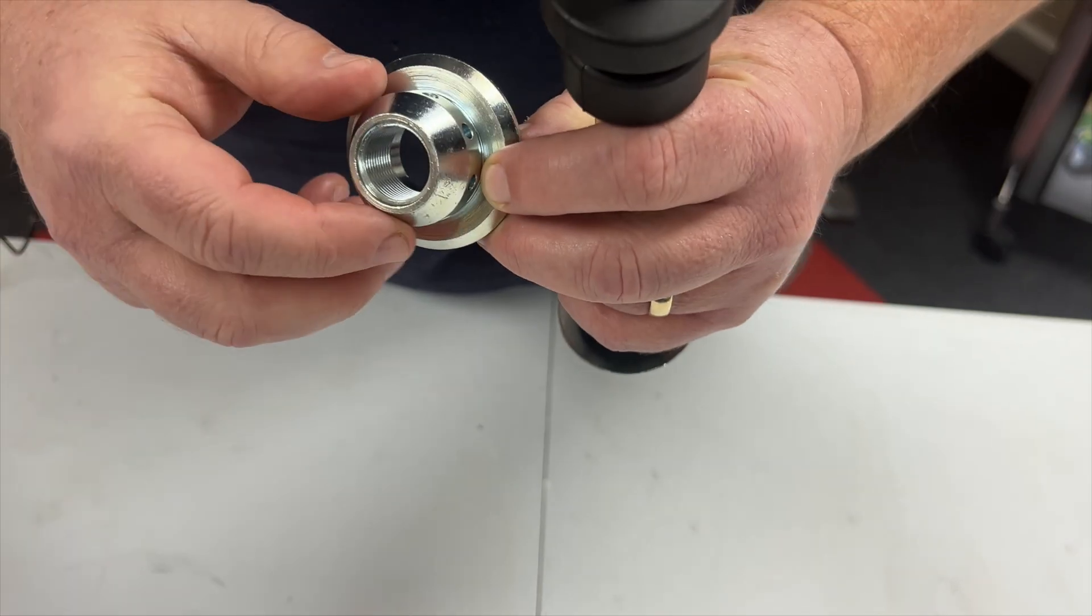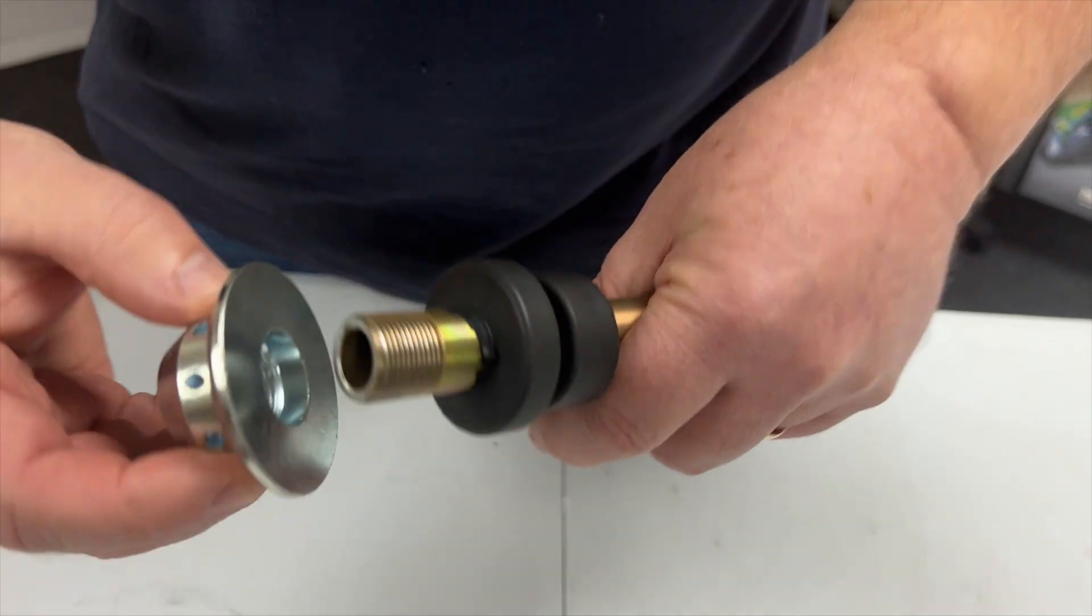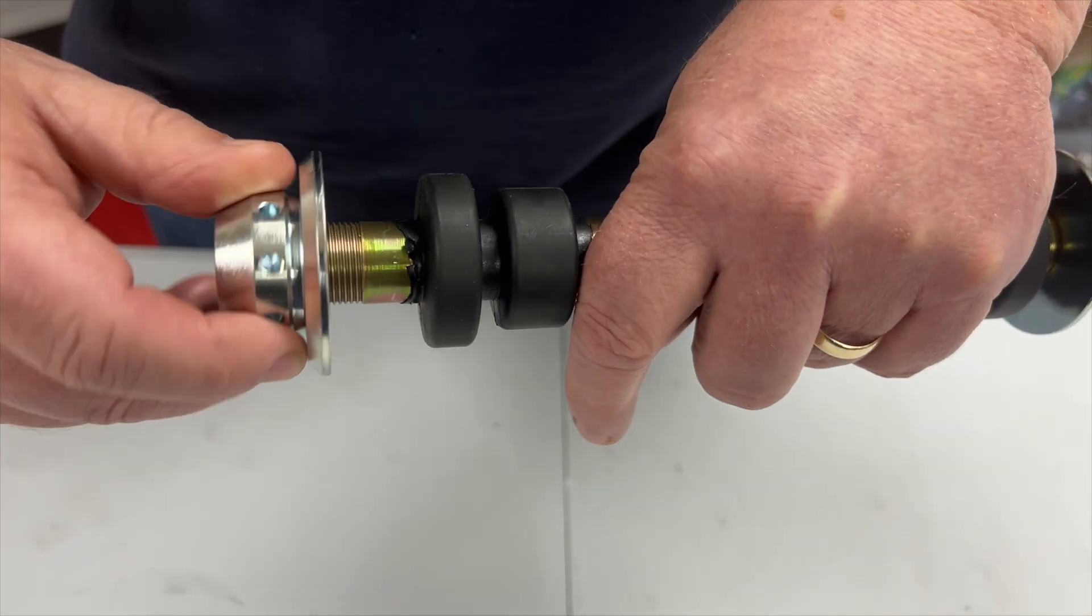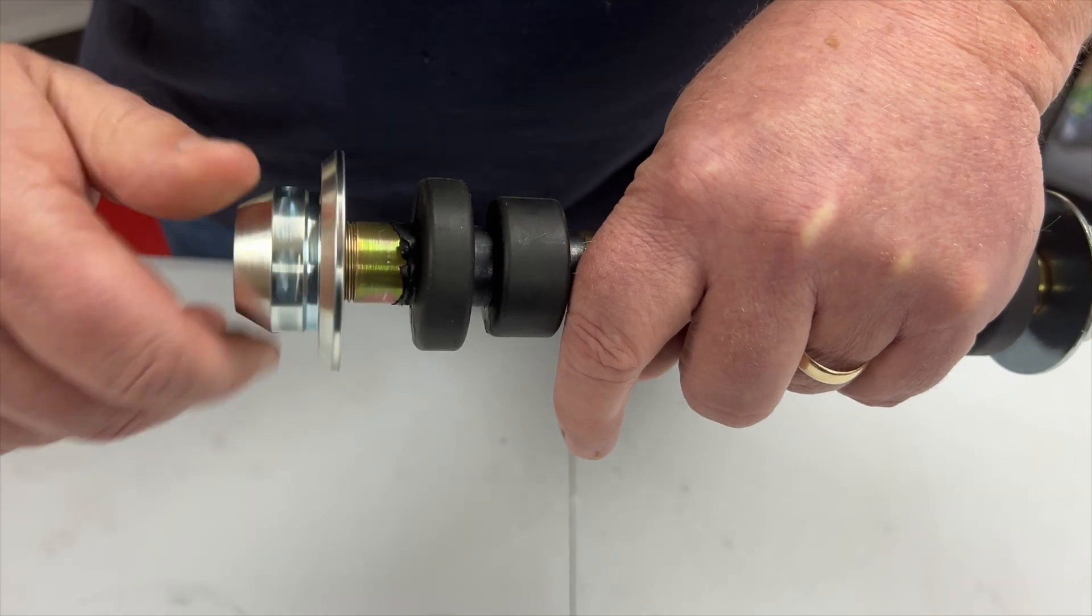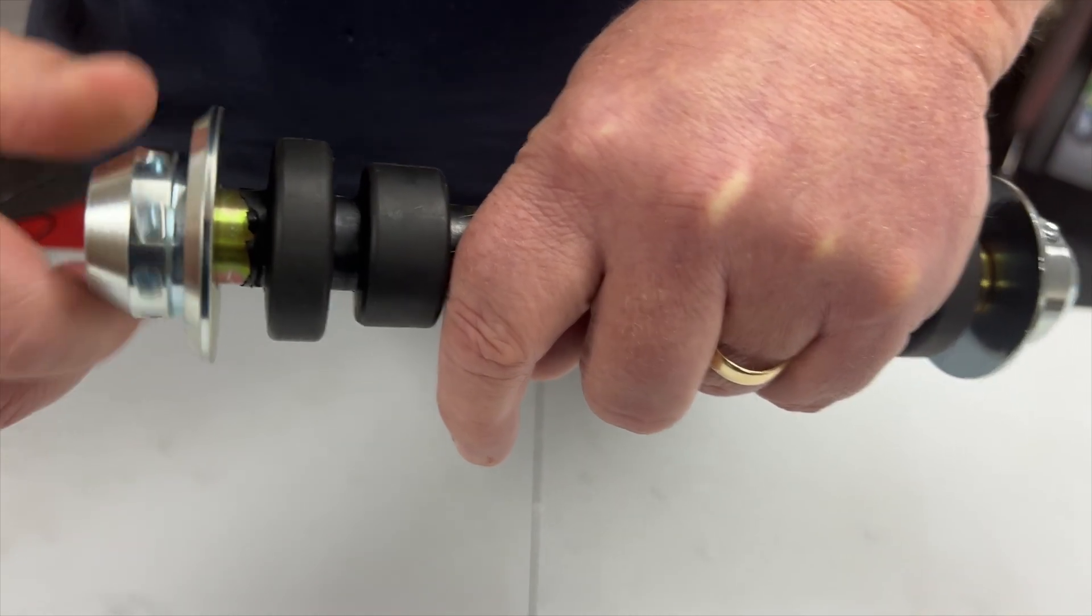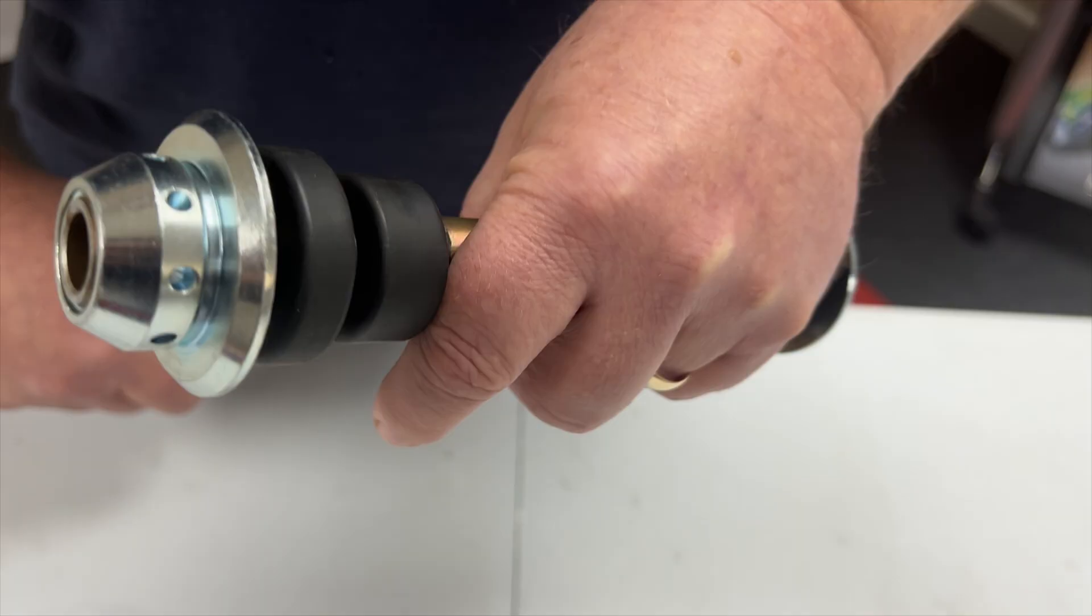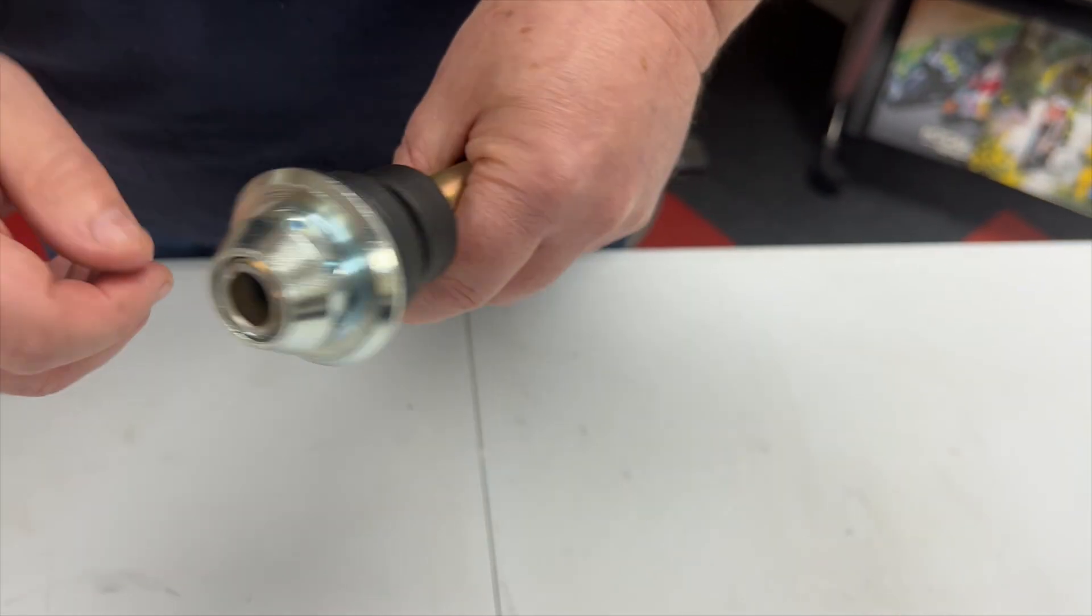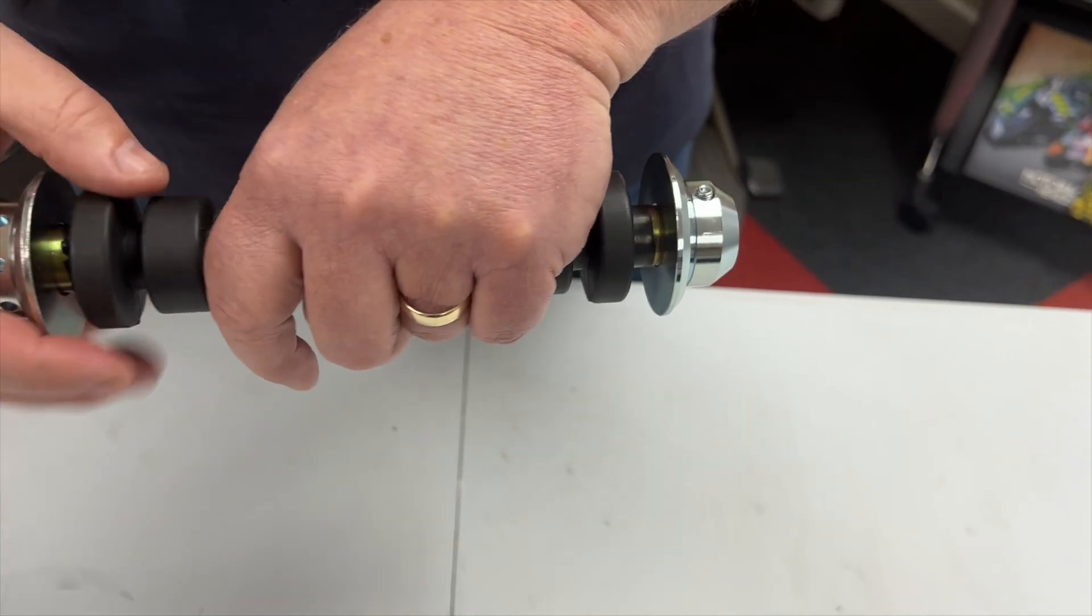The adjuster goes on the full threaded portion, goes on to the full threaded portion on there, so that goes on like that. You can see you've roughly got the same distance there and there. That's how it goes.